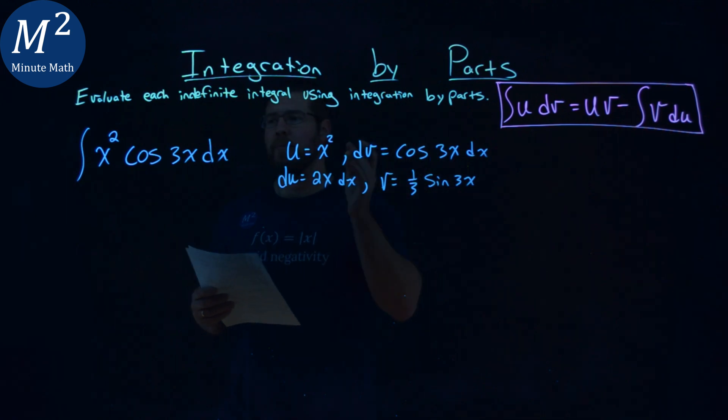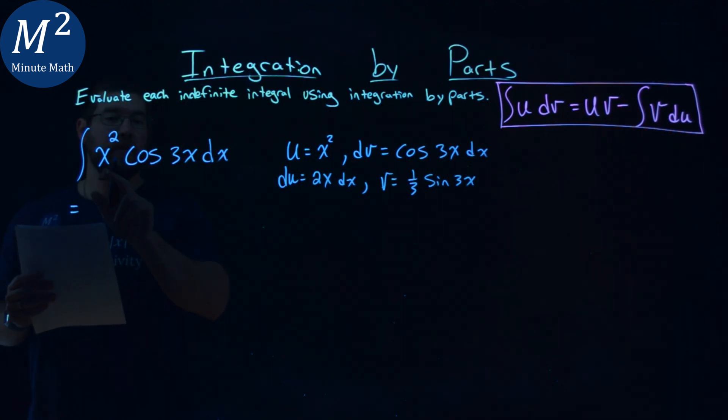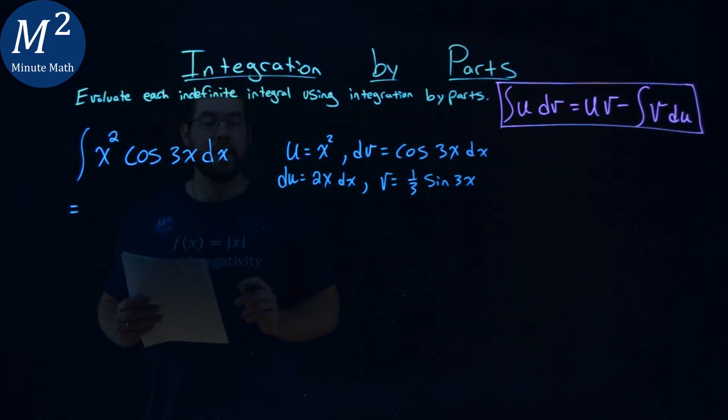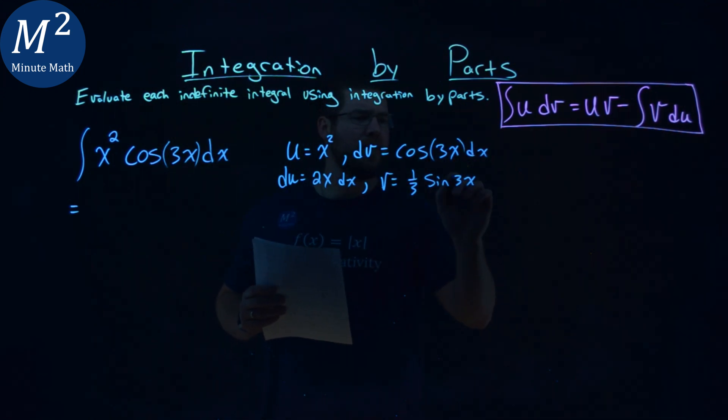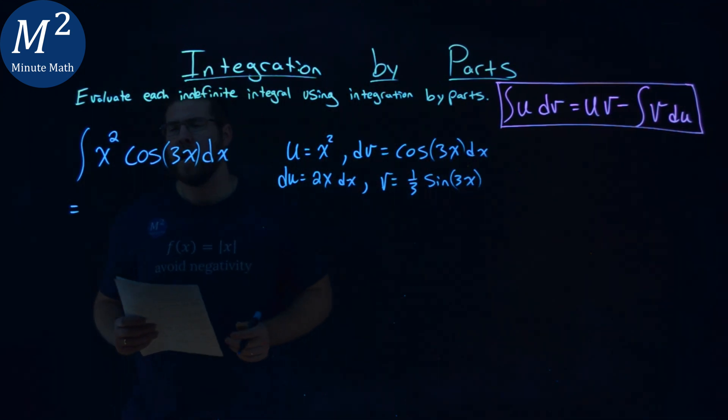Let's go apply our formula here. We have a u and a dv value written right here. This is cosine of 3x.